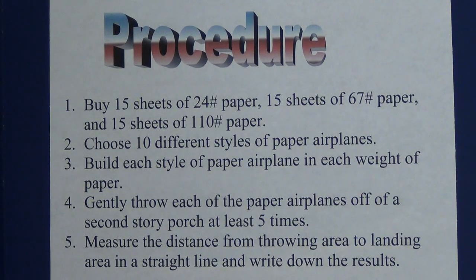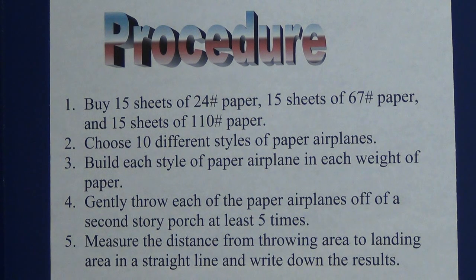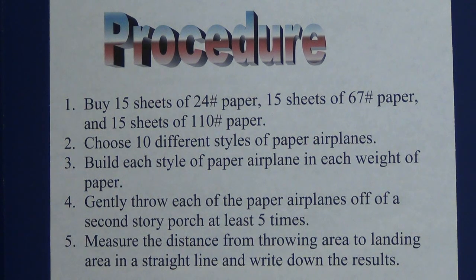In the second example, the question was: does the weight of the paper affect how a paper airplane will fly? The procedure was: first, buy 15 sheets of 24-pound paper, 15 sheets of 67-pound paper, and 15 sheets of 110-pound paper. Two, choose 10 different styles of paper airplanes. Three, build each style of paper airplane in each weight of paper. Four, gently throw each paper airplane off a second story porch at least five times. Five, measure the distance from the throwing area to the landing area in a straight line and write down the results.